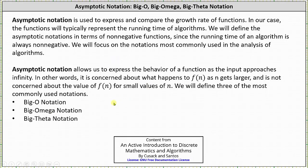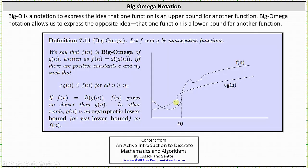And now let's talk about big omega notation. Recall from the last lesson, big O notation is used to express the idea that one function is an upper bound for another function. Big omega notation allows us to express the opposite idea — that one function is a lower bound for another function.